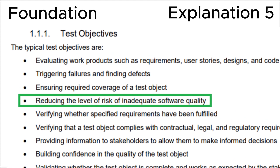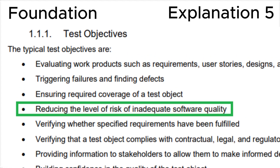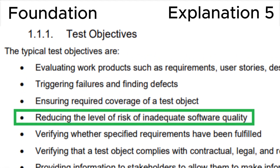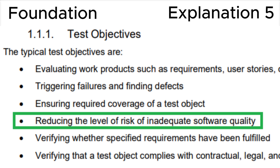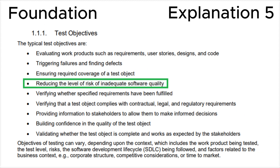Moreover, looking at section 1.1.1 — Test Objectives — in the syllabus, the fourth point is 'reducing the level of risk of inadequate software quality,' which is fully consistent with the correct answer D.